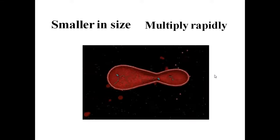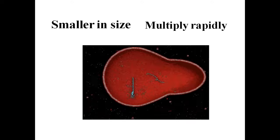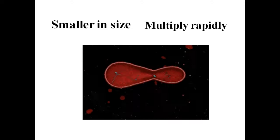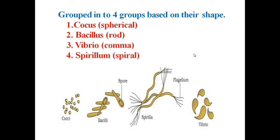Prokaryotes are mostly smaller in size and multiply more rapidly than eukaryotic cells. They may vary in shape and size. The four basic shapes of bacteria are: bacillus, coccus, vibrio (comma shape), and spiral shape.